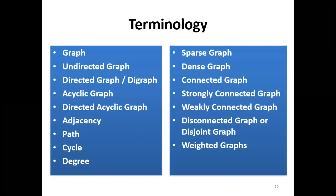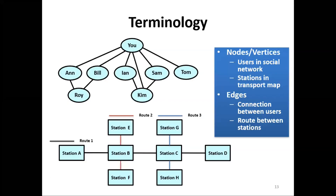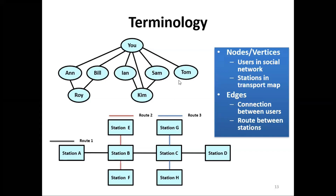Now let's look at some terminologies, using social networks and transportation maps as examples. The nodes represent users in a social network, and in a transportation map, nodes represent stations. The edge connects two users together — for example, the edge connecting you and Tom, or you and Sam. In the transportation map, an edge connects station E and station B together.